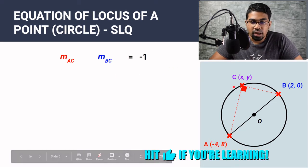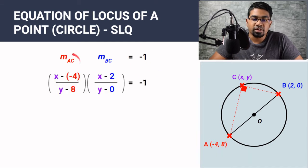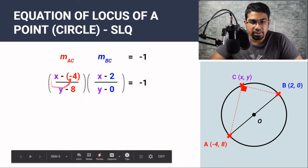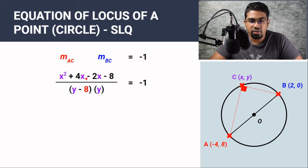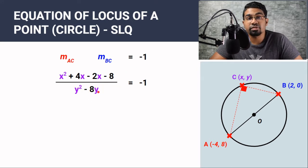The gradient of line AC multiplied by the gradient of line BC must give us negative 1. We find the gradient by using (y2 − y1) over (x2 − x1). So for AC we have (x − (−4)) over (y − 8), and the gradient of BC is (x − 2) over (y − 0). This product must give us negative 1. When we work this out, we get x² + 4x − 2x − 8 at the top, and at the bottom we get y² − 8y.